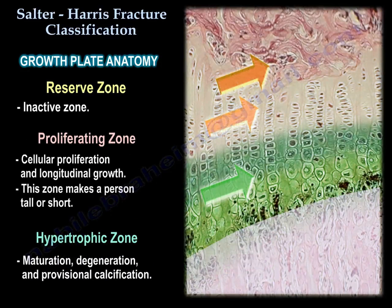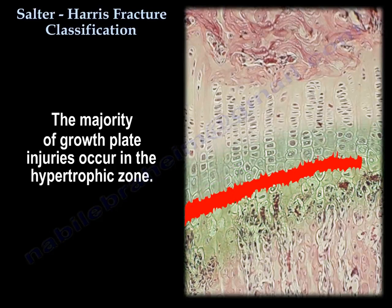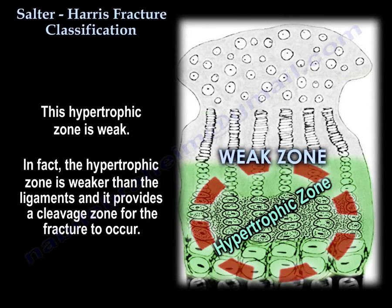There is a resting zone — an inactive zone — and then the cells become active, forming the proliferating zone. These cells then get bigger, forming the zone of hypertrophy. Then they mature in the zone of maturation, then degenerate, and get calcified — that is the zone of provisional calcification. All three stages are within the zone of hypertrophy. The majority of growth plate injuries occur in the hypertrophy zone, which is weak — weaker than the ligaments — and provides a cleavage zone for fractures to occur.